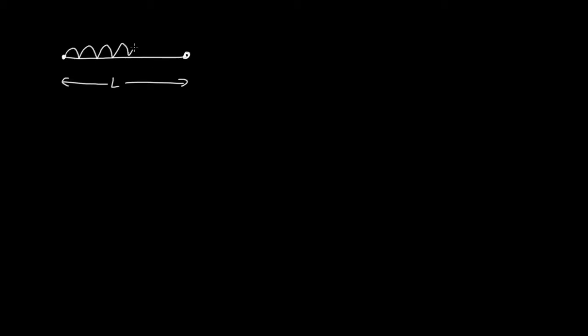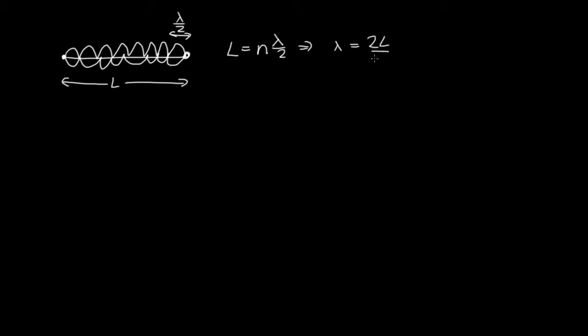So let's prove that now. We're going to consider a piece of string with length L and a standing wave on that string, which means there's some integer number of loops. In this diagram n could be 1, 2, 3, 4, 5, 6, 7, 8 — but n can be any integer. We've already said that the length of the string equals n times half a wavelength, because each loop has length λ/2. So this tells us that λ equals 2L over n — this is the wavelength of the nth harmonic.